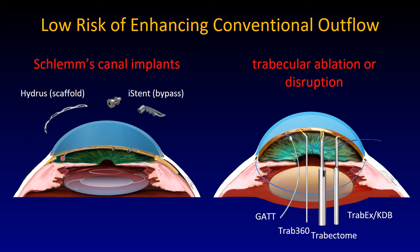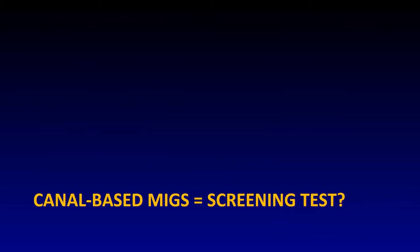Here is the slide showing the low risk of enhancing conventional outflow at the trabecular meshwork level. You can put in a scaffold or stents that bypass the trabecular meshwork — though the iStent and Hydrus are not very effective long-term. The Hydrus does give broader access to Schlemm's canal. One could also disrupt or ablate: the Gonioscopy-Assisted Transluminal Trabeculotomy uses a suture threaded through to tear the meshwork open, the same can be done with a plastic wire device. The Trabectome is now 17 years old, one of the oldest MIGS.